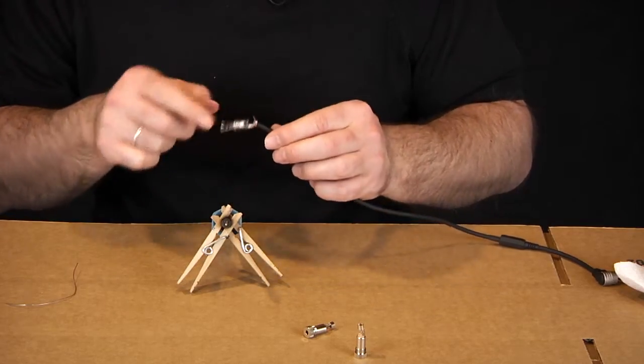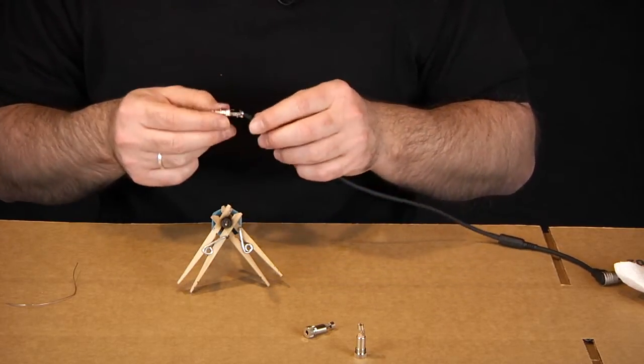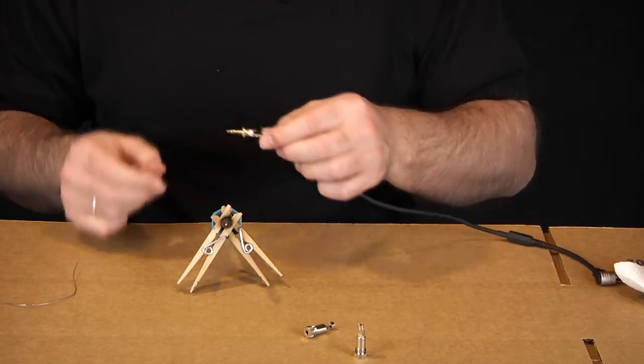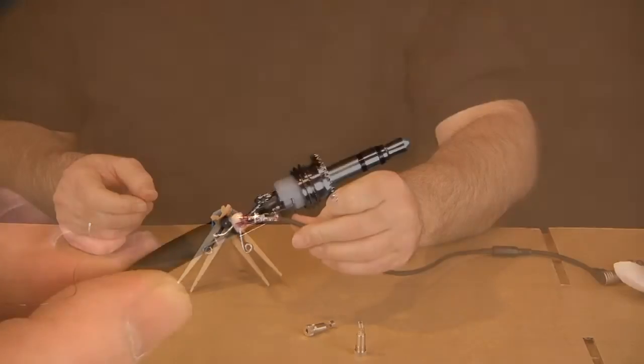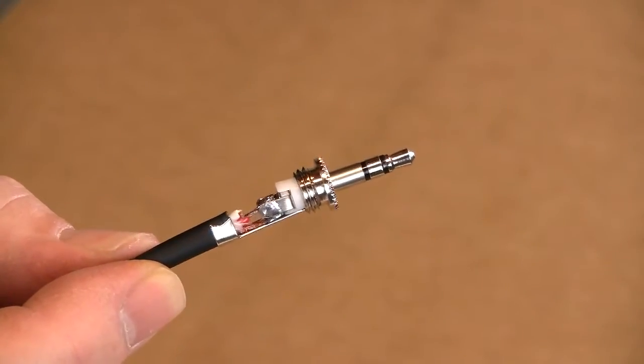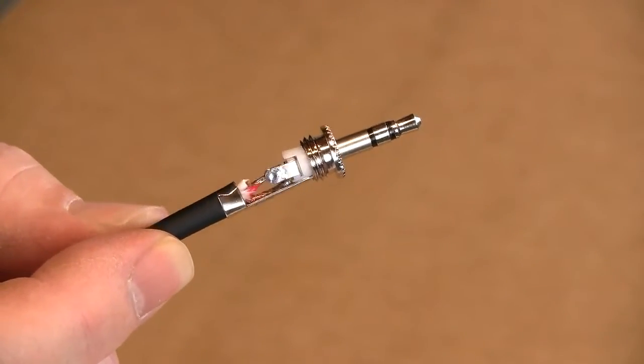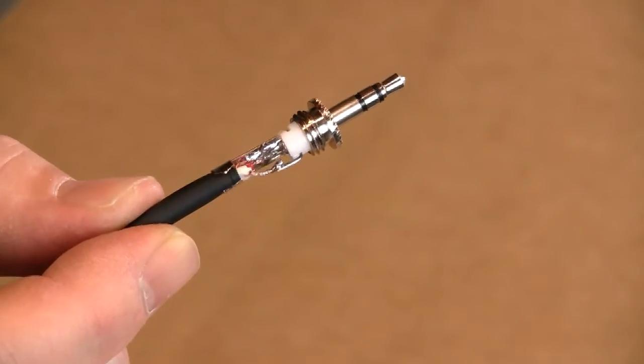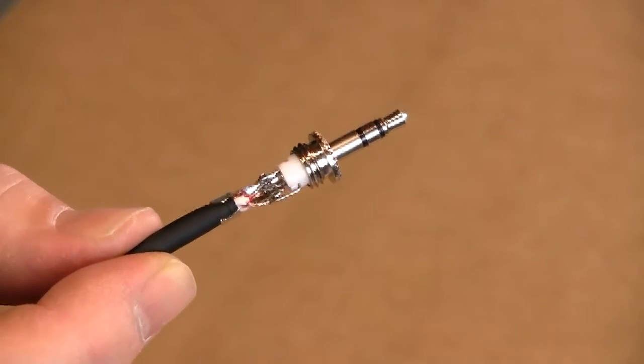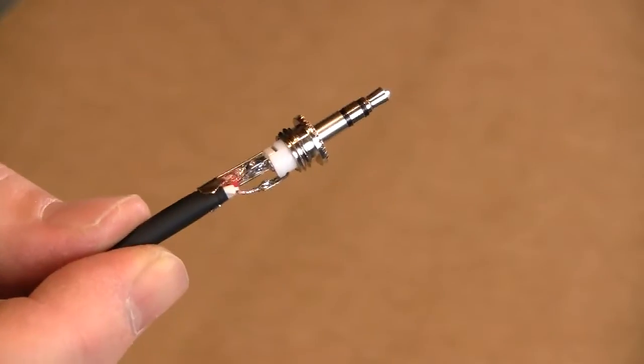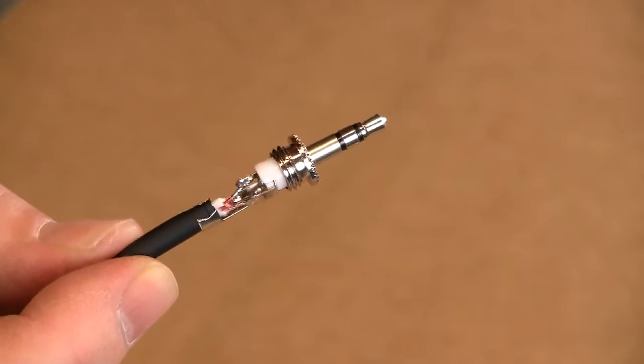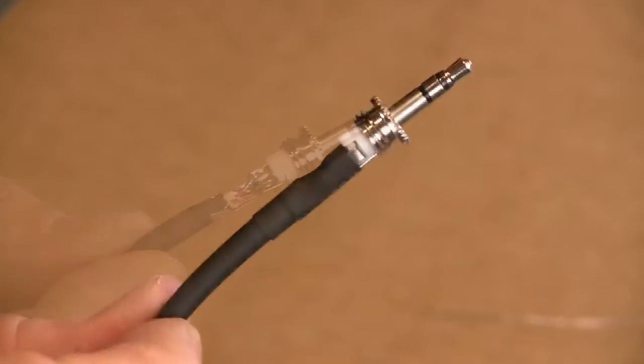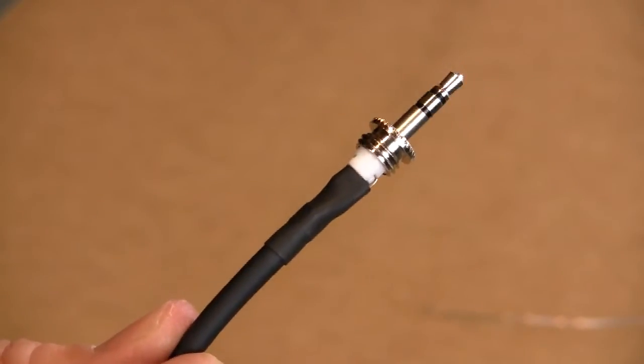So I'm going to go ahead and solder the other two pins in here. And we'll close this up and we'll give it a test. Here you can see I have the male connector soldered onto the cable. You'll definitely want to take your time on this. Make sure that you don't have a bunch of solder glopped in there or any stray wires. And once you're done soldering, you'll want to test it for any dead shorts before you cover it up.